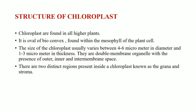The structure of the chloroplast: chloroplasts are found in higher plants, with an oval shape, and are also found in the mesophyll of plant cells. The size of the chloroplast usually varies between 4 to 6 micrometers in diameter and 1 to 3 micrometers in thickness. They are double membrane organelles with inner, outer, and intermembrane space, where the outer membrane is not permeable and the inner membrane is selectively permeable.